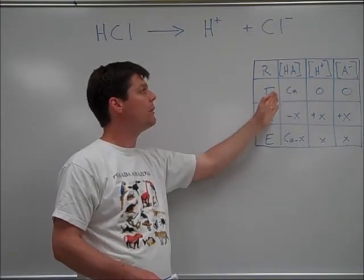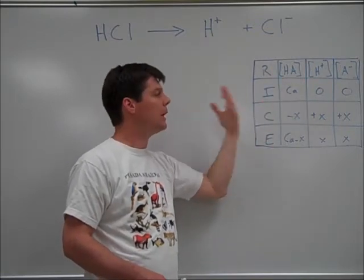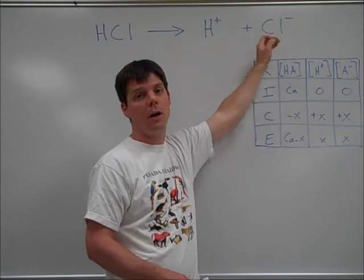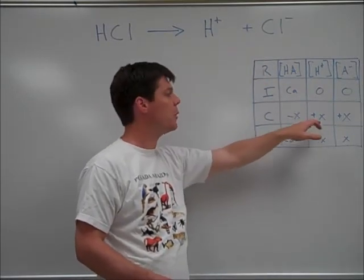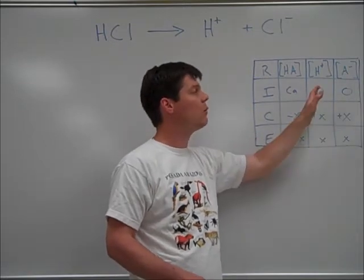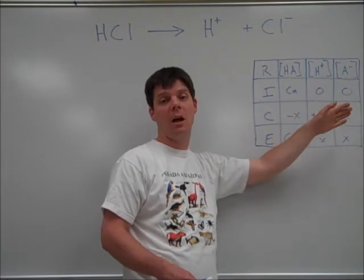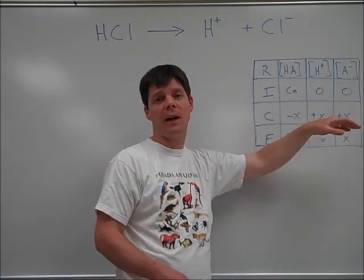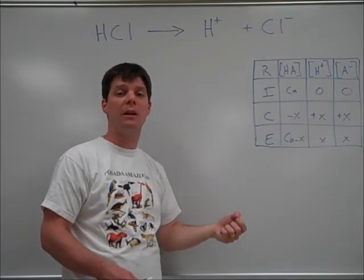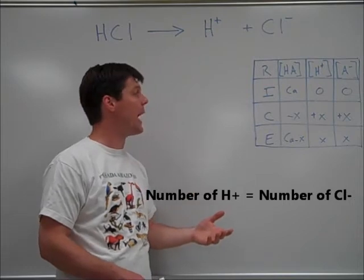Now the change: we would have the conversion of HA, HCl, into hydrogen ions, chloride ions. So we would have a reduction here in how much HCl is present. We would have a gain of plus X for both the H and the A minus, or the H plus and the Cl minus. We will have the value of positive X and positive X for both the H plus and the A minus, in this case the Cl minus, because hydrogen chloride is a monoprotic acid.